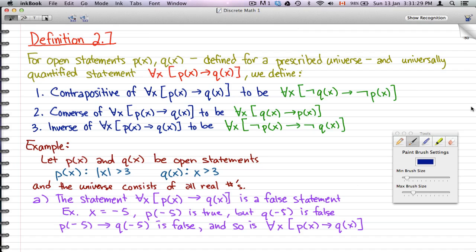Okay, so now that we have that done, let's go through an example. So, let's have p(x) be |x| > 3, and q(x) be x > 3. And the universe consists of all real numbers like I have here. So, if we look at the statement for all x, p(x) implies q(x), now, that is a false statement.